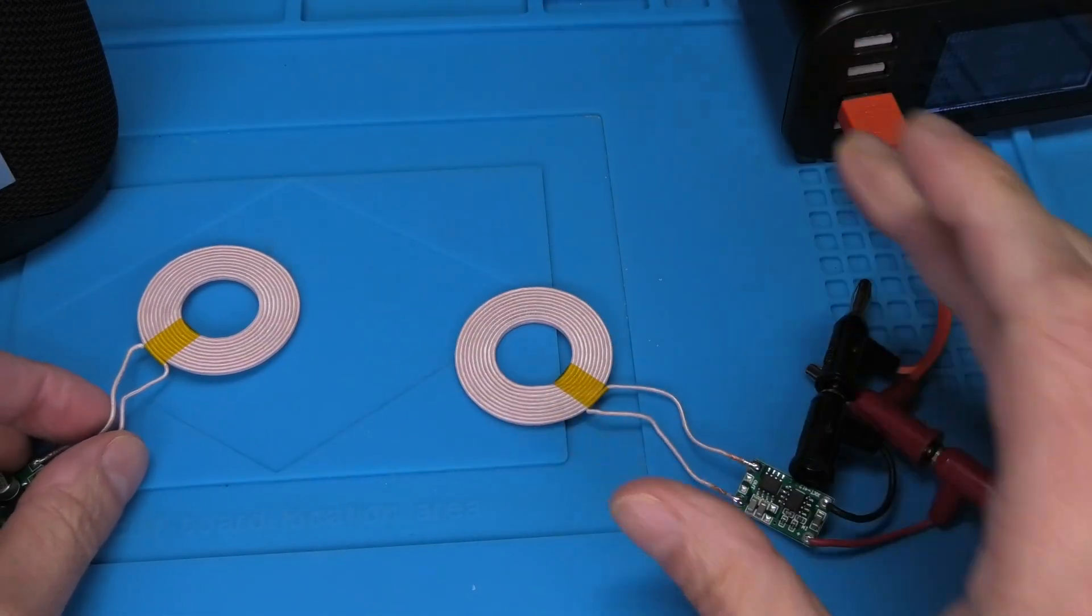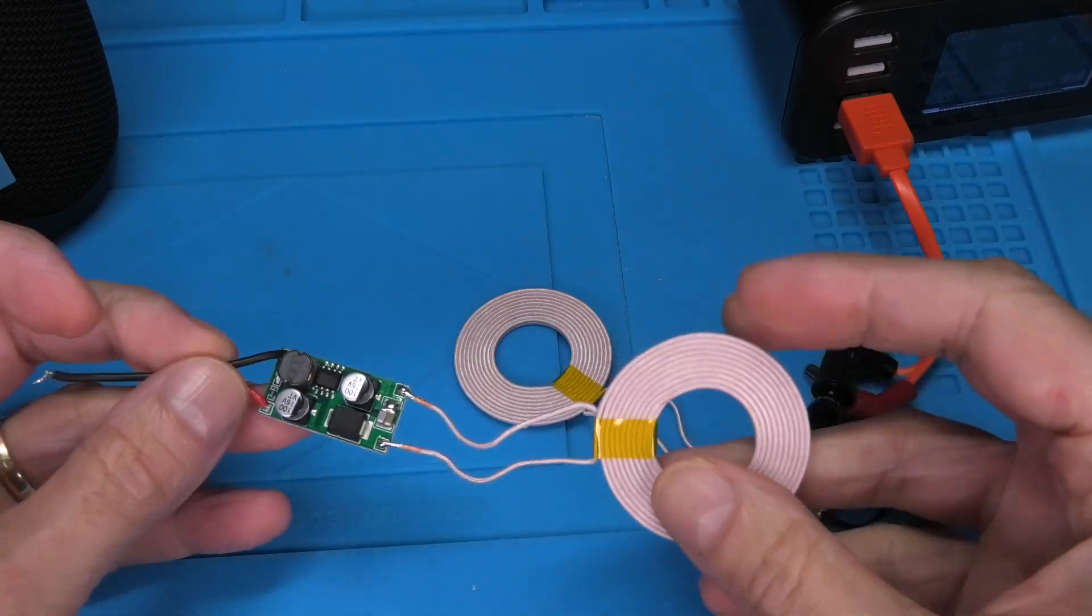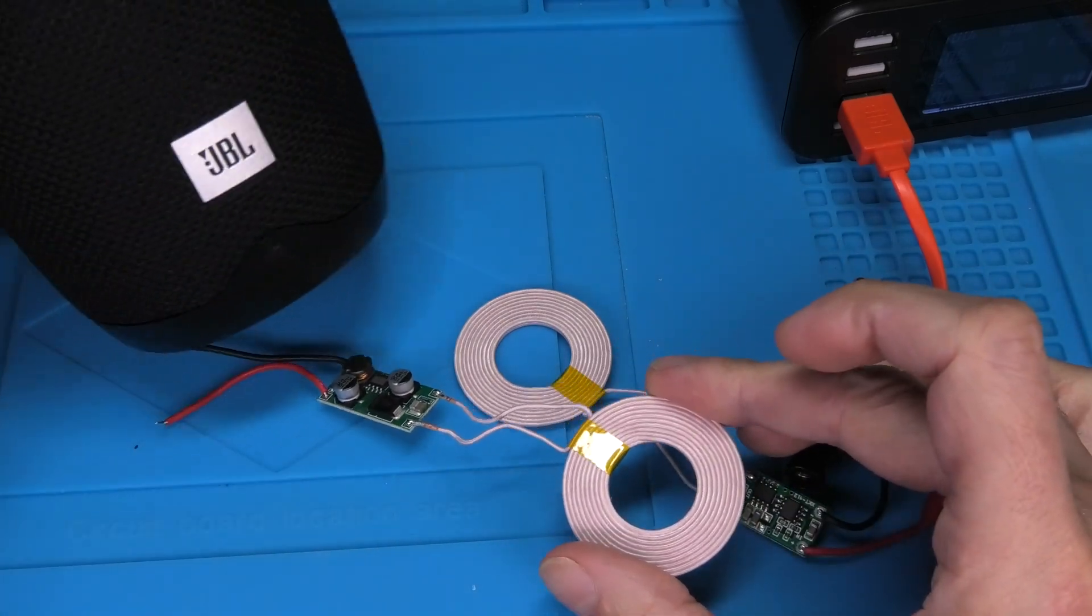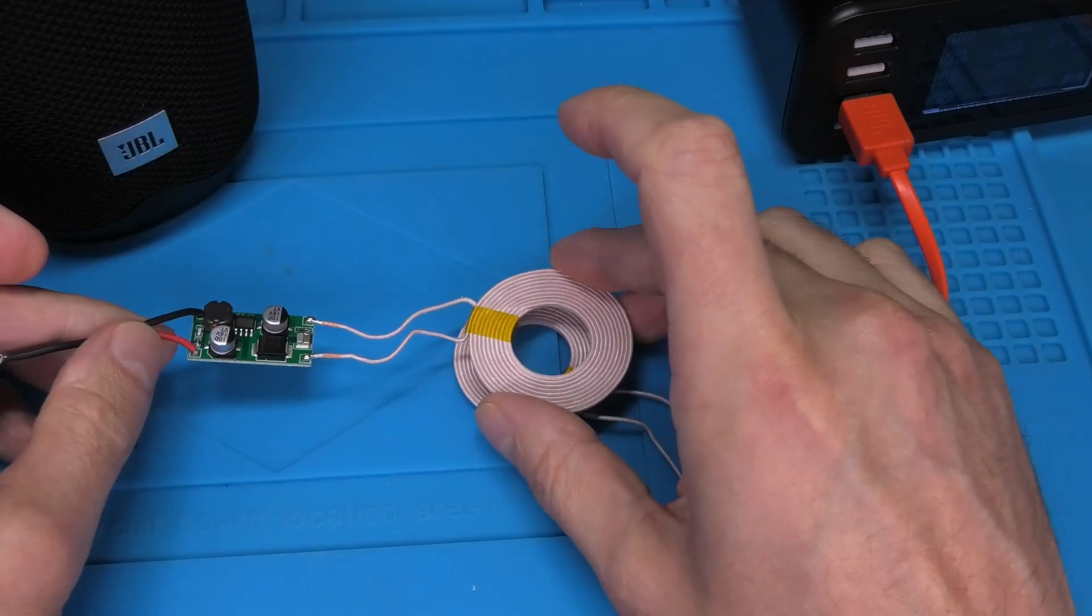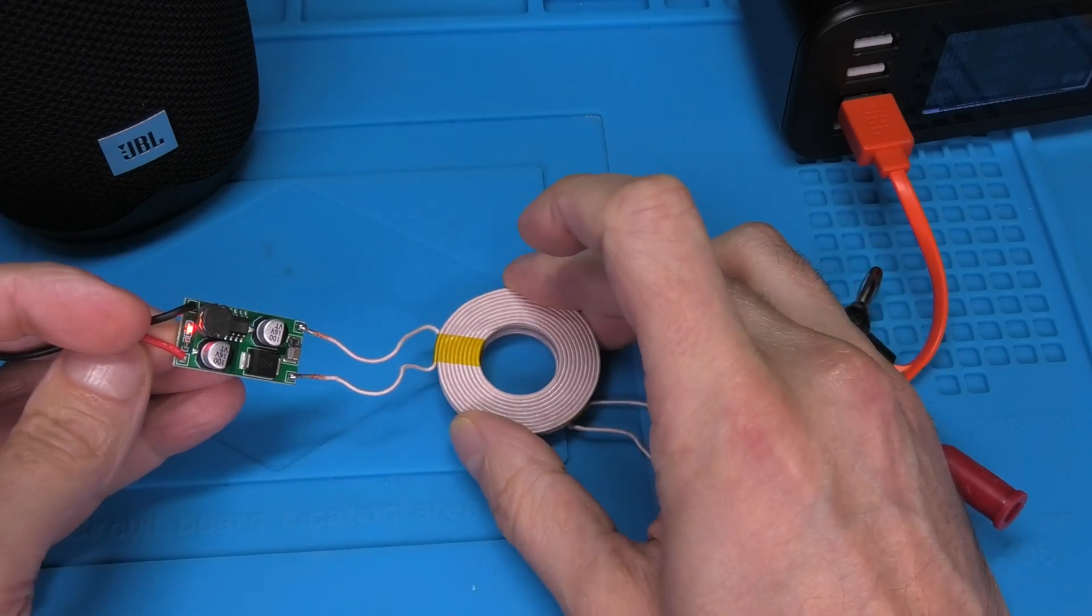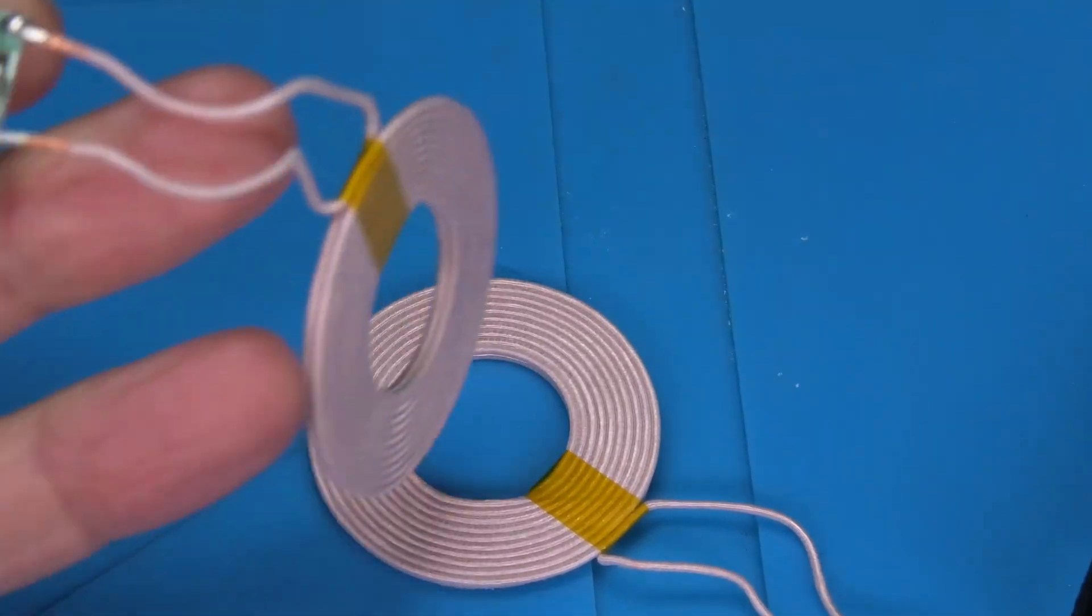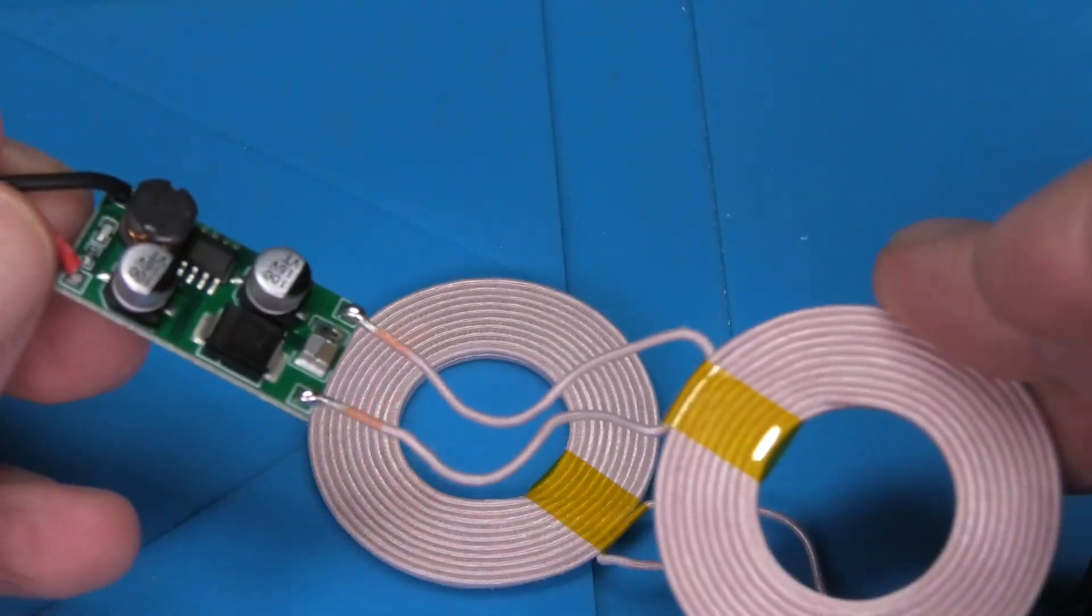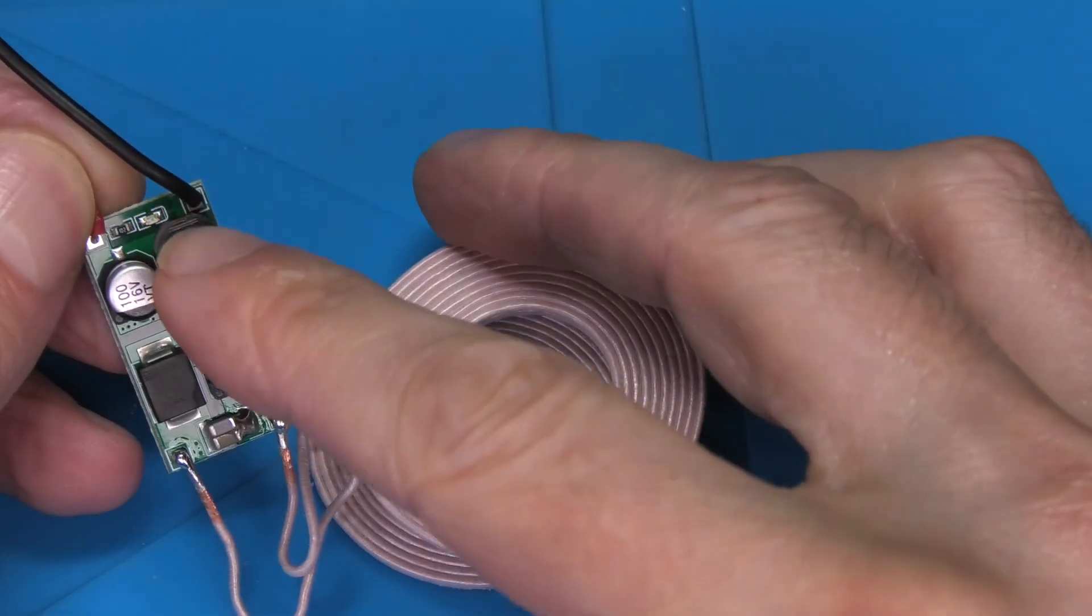And then we do have the receiving coil which we are going to install into our Link 20 speaker. Just like this here on the bottom. And then as soon as we get close with this coil, with the receiving coil really close to the emitting coil, then it is going to pick up the charge. You can actually see this right now on this little LED here on the small PCB on this board. The LED lights up, and that indicates that we are receiving a charge.